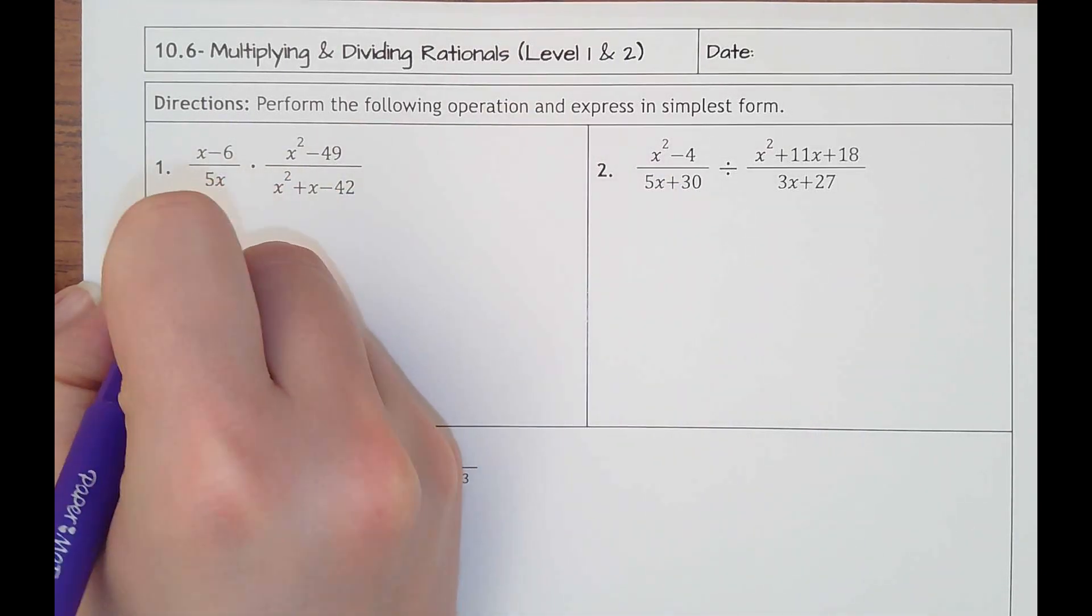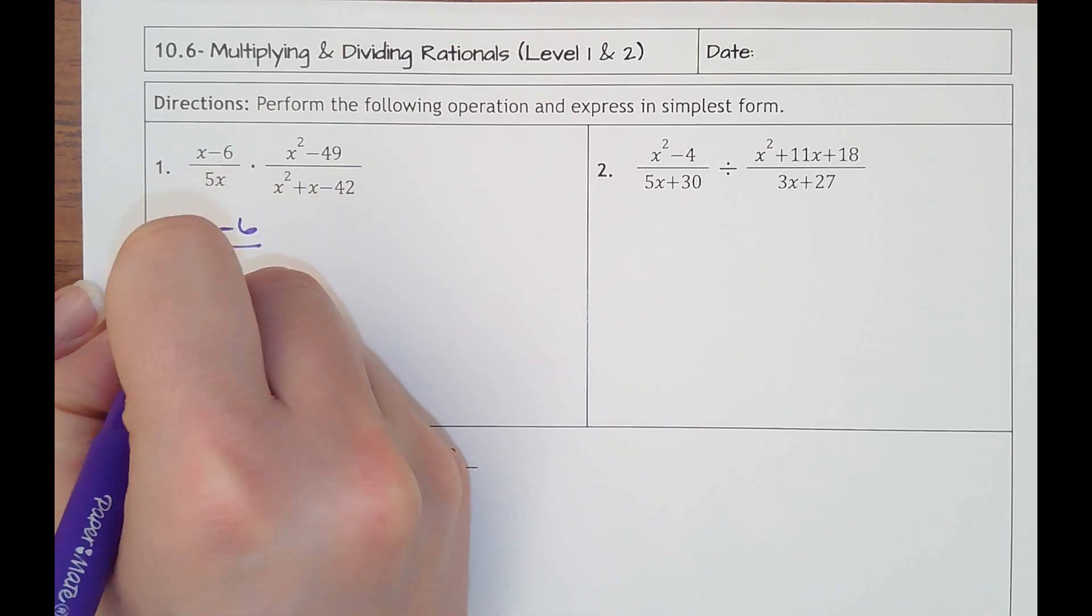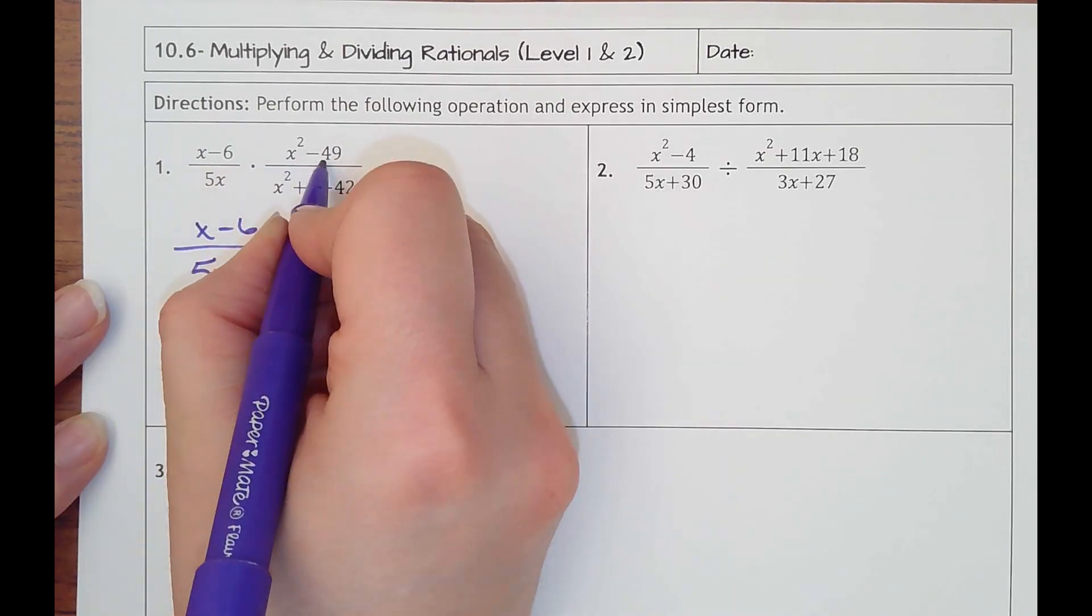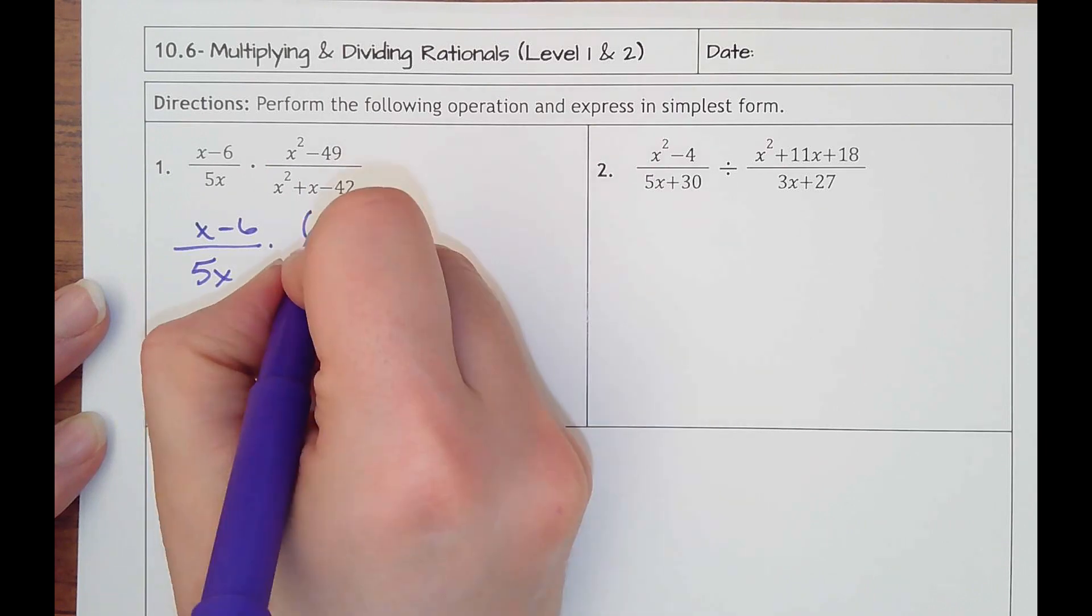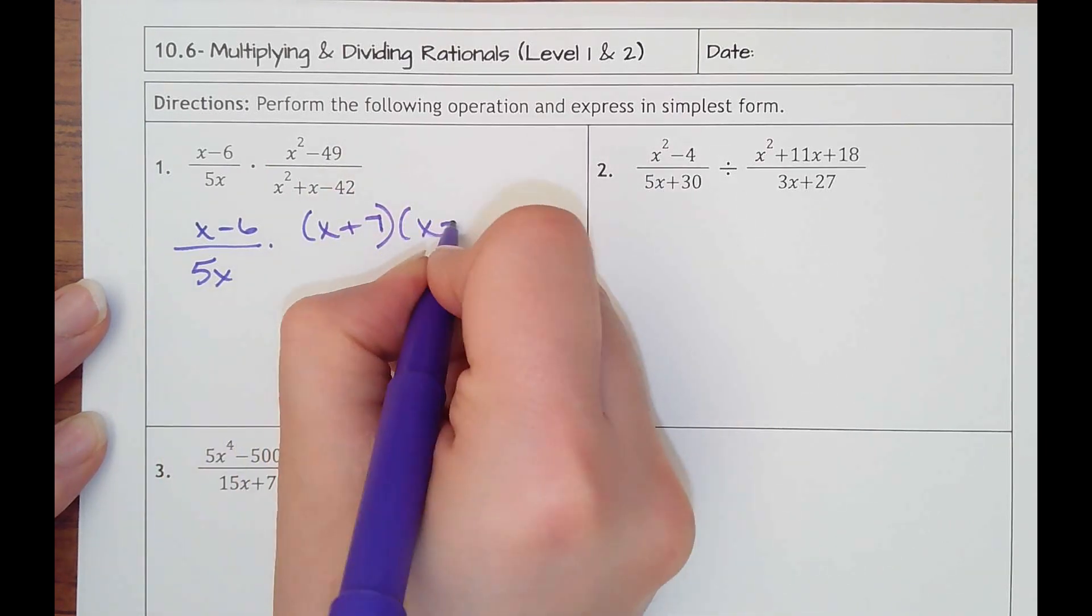So x minus 6 is going to stay and so is 5x. But this x squared minus 49 is a difference of squares. That would be x plus 7 times x minus 7.